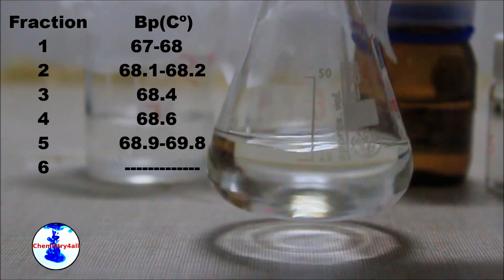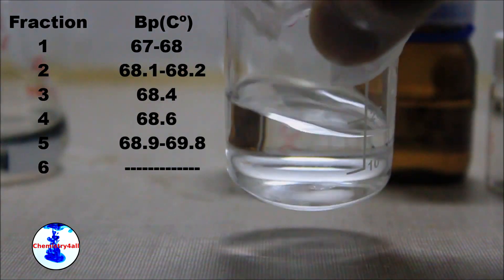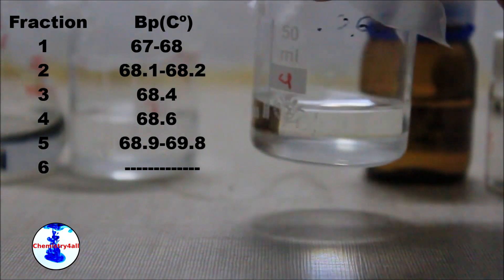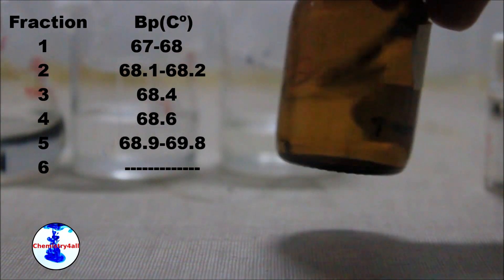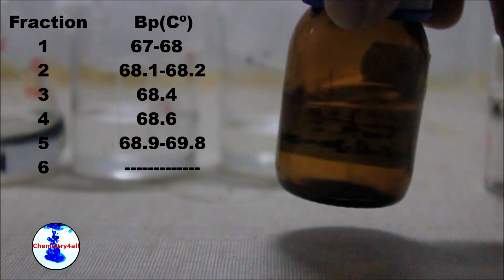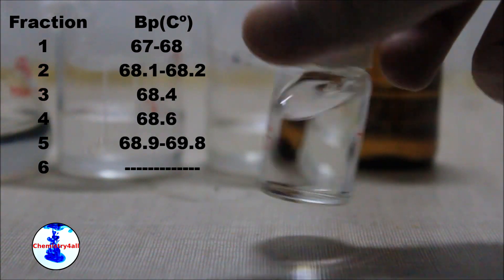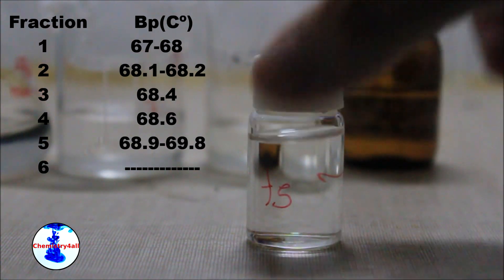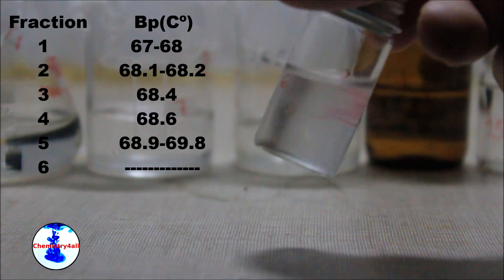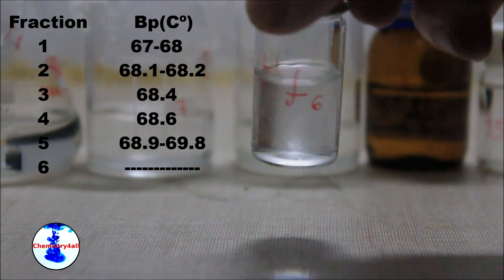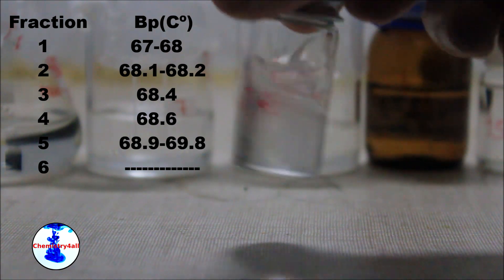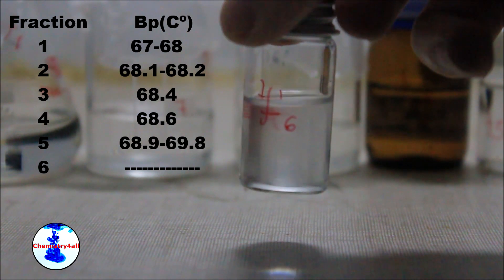The first 4 fractions were actually pretty close to each other, having boiling points of around 68 degrees. On the other hand, fraction 5 has a slightly greater boiling point, ranging from 69 to almost 70 degrees. The last fraction was the remaining solution in the flask, and as you can see is slightly cloudy, which may indicate the presence of some water or ethanol in the solution.